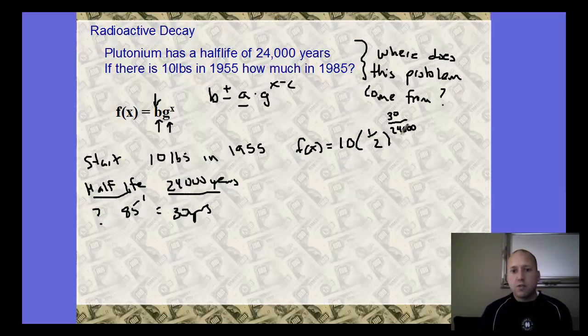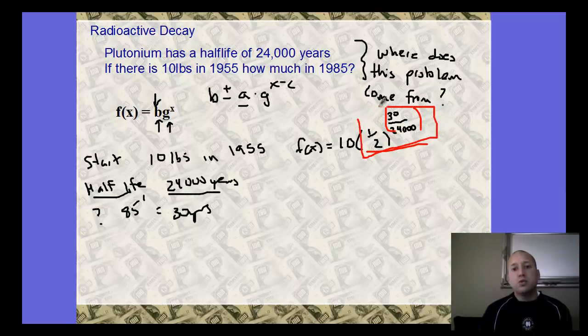This is what the formula would be to figure out the amount of plutonium from 1955 to 1985. If you plug this in your calculator, make sure you actually have your exponent in parentheses. You have to do one-half to the power first, use your exponent rules. You evaluate this and then multiply it by 10. If you do that, you get 9.913 pounds in 30 years. That's how much you would actually have.